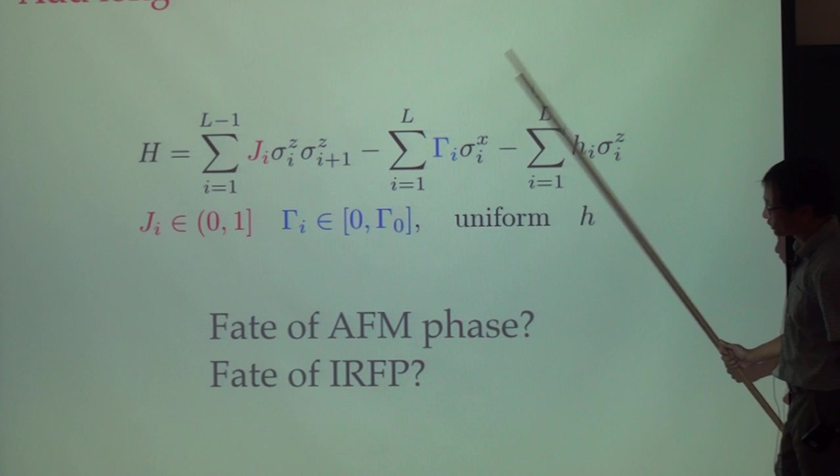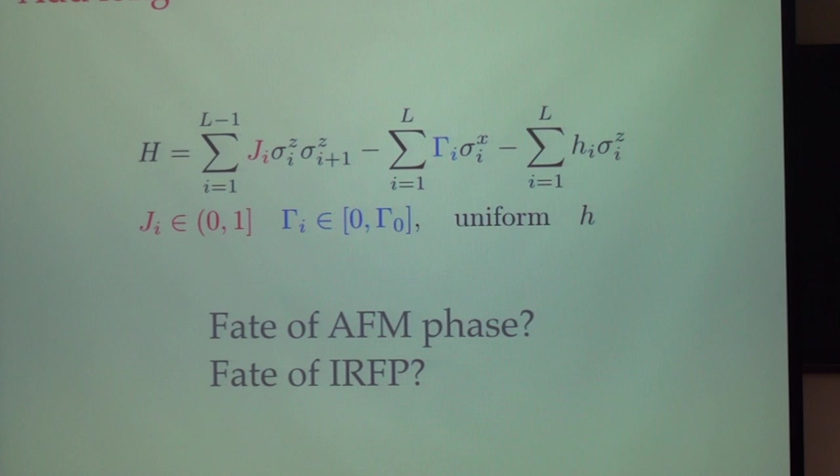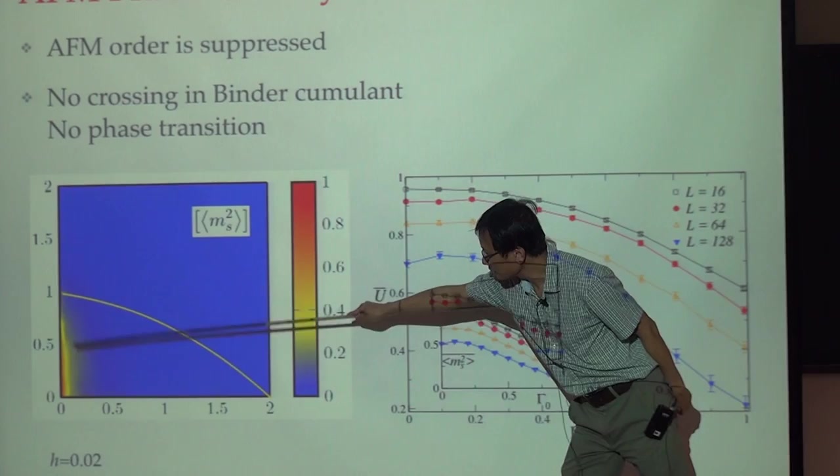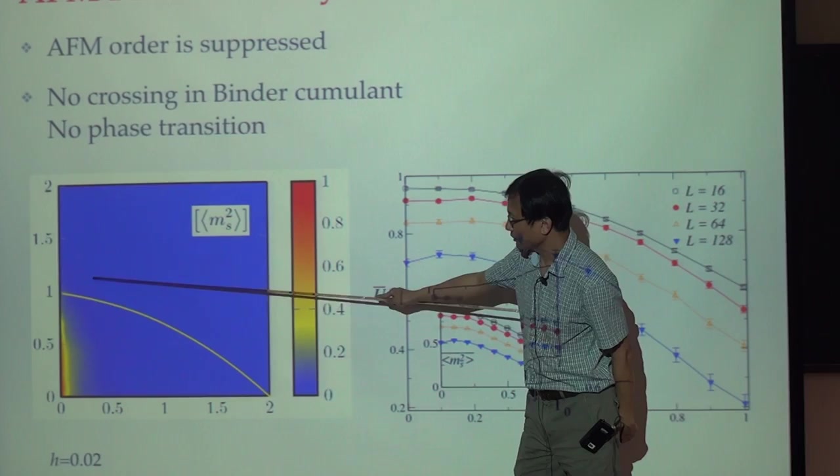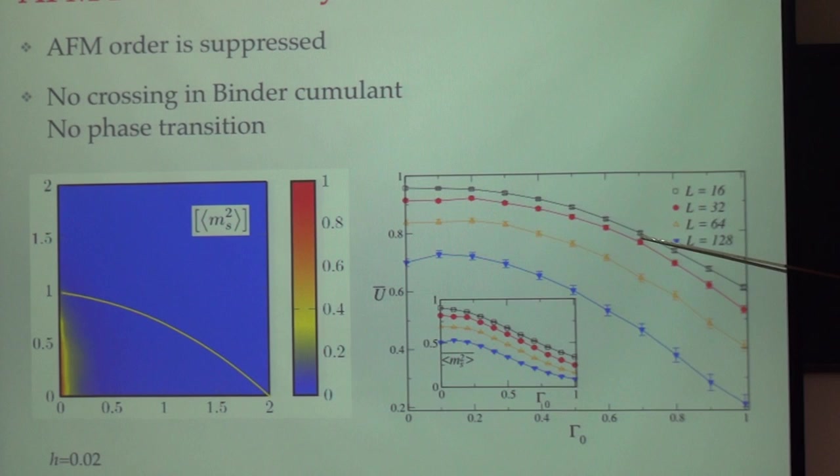We want to add a longitudinal field. We want to see what's the fate of this antiferromagnetic phase and what's the fate of this infinite randomness fixed point. I just add a small longitudinal field. It's kind of depressing but it turns out I had a very small field. This is the original phase boundary, I had a very small longitudinal field. All my staggered magnetization, this order parameter gets squashed, it becomes zero. This antiferromagnetic order is destroyed by a small longitudinal field.